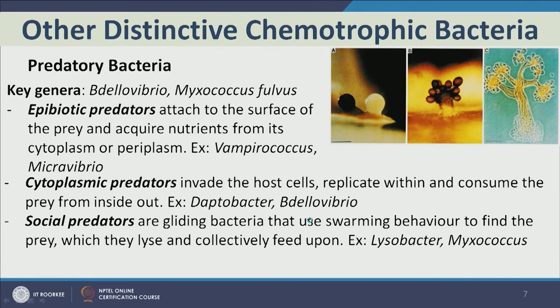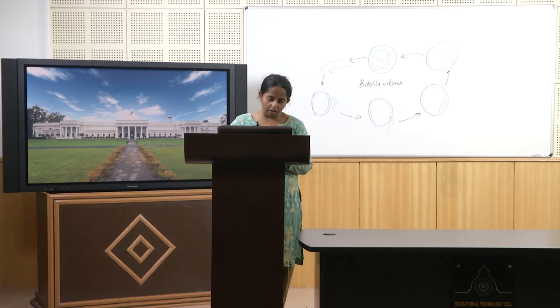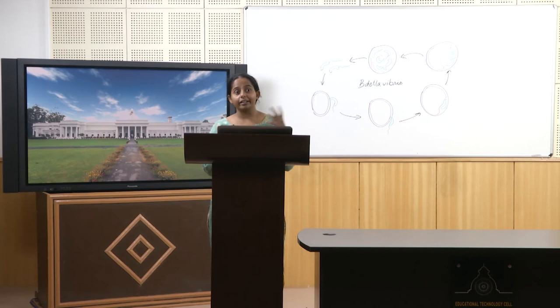Now we are going to talk about predatory bacteria. So far we have talked about bacteria that utilize chemicals and energy sources in their environment to drive biochemical reactions for energy and carbon. But now we have microbes that actually prey and live off other microbes — this is a predator-prey model for microbes. Predatory bacteria literally attack a bacterium, kill it, and eat it.